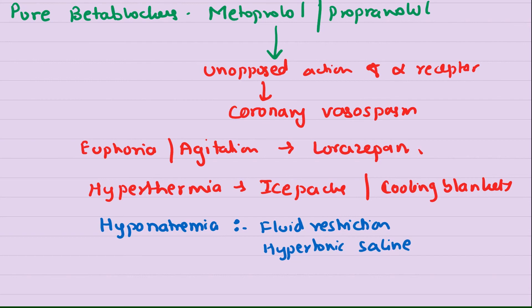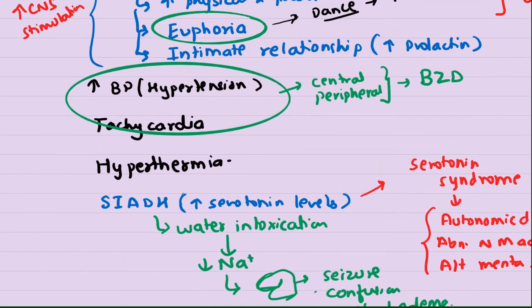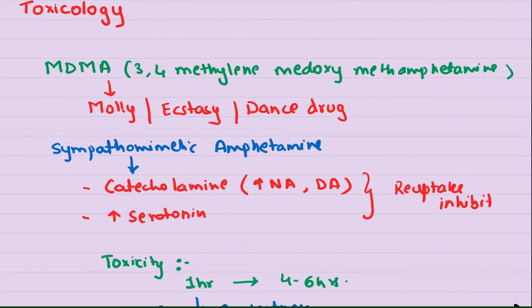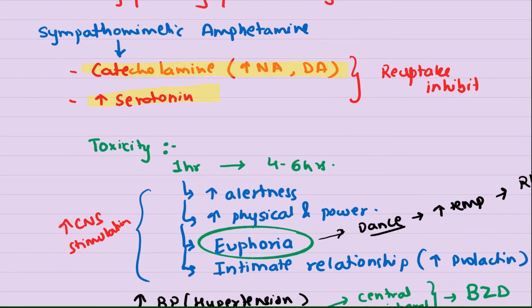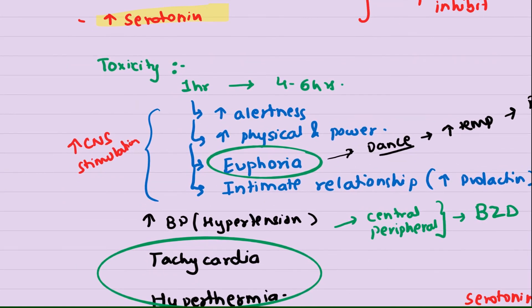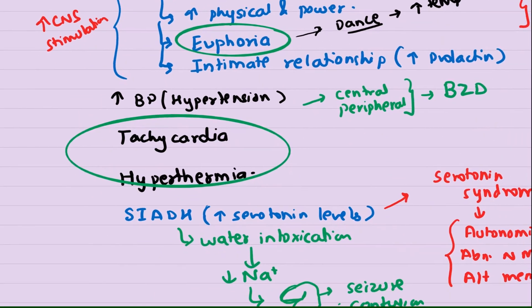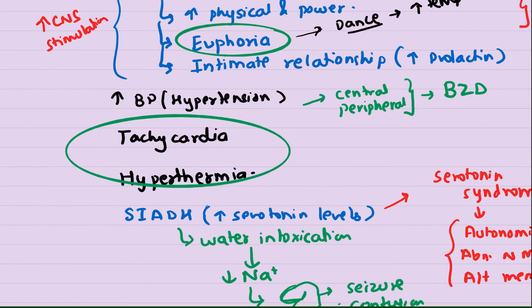This is how you treat a case of MDMA. From MCQ point of view, remember some important points. First, MDMA's full form is 3,4-methylenedioxymethamphetamine. What drugs does it increase? It increases the release of noradrenaline and serotonin - this is an important MCQ. In how many minutes does the effect start? Usually it starts in one hour. What symptoms can it cause? It can cause euphoria and other important symptoms like hypertension, tachycardia, and hyperthermia. Hypertension is because of both central and peripheral stimulation, so first we treat with benzodiazepines.